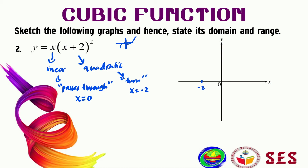We have negative two here and zero here. Since we have a positive coefficient of x³, the graph turns at x = −2 and passes through x = 0. So the graph turns here and passes through zero. Let's sketch the graph now — it turns at x = −2 and then passes through zero.